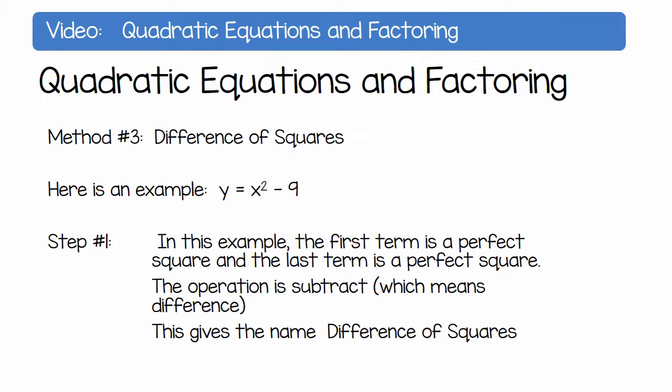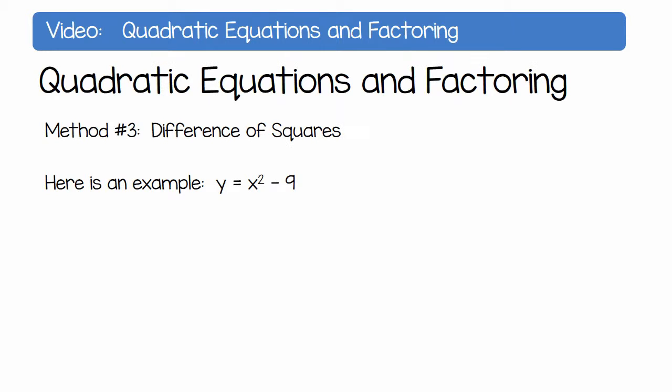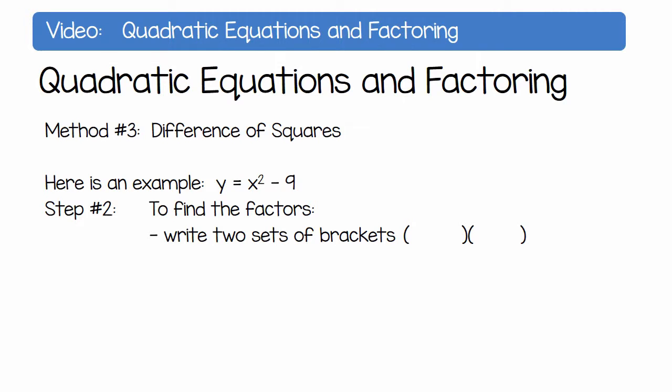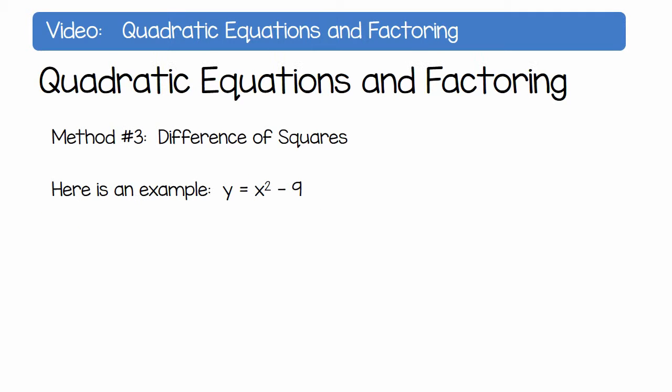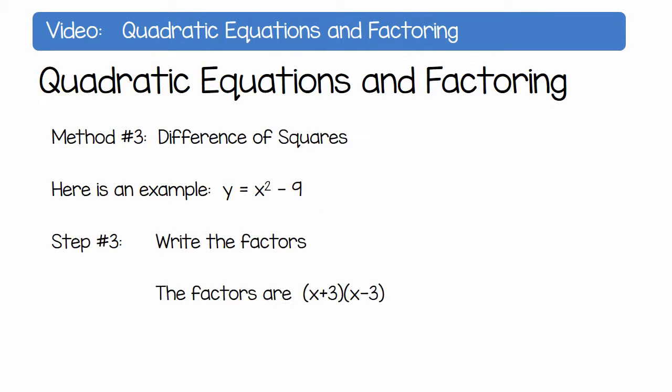But how do we factor this? To find the factors, write two sets of brackets. In the first set of brackets, put the square root of each number separated by the plus sign: x plus 3. In the second set of brackets, put the square root of the last number and the square root of the first number separated by the minus sign: x minus 3.